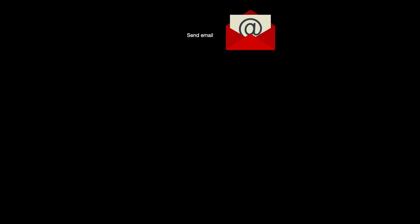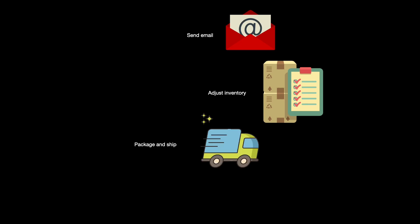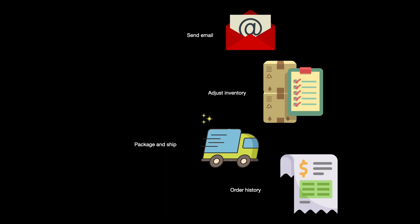Let's say we have a standard e-commerce system that allows users to purchase a product on a website. When a purchase is completed, a number of things need to happen: one, an email receipt should be sent to the purchaser; two, inventory numbers should be updated to reflect fewer products available; three, a fulfillment system needs to be notified so the product can be shipped; and four, a purchase history should be updated for both the customer and the company.